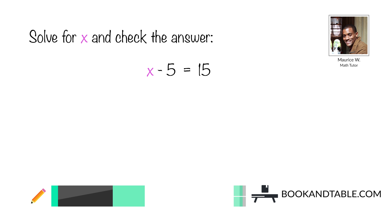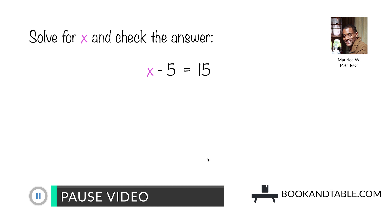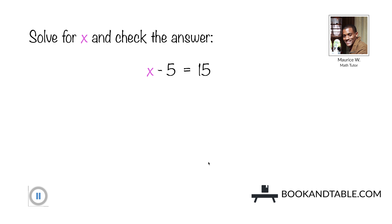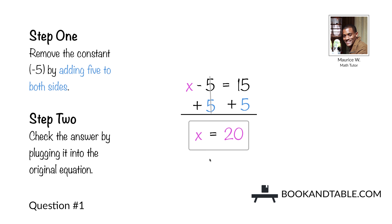Question number one: solve for x and check the answer. x minus 5 is equal to 15. Pause the video to solve this question, then press play when you are ready. Step one: remove the constant that is on the same side as our x term, which is negative 5, by adding 5 to both sides.